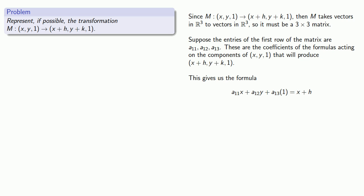In order for this to be true for all values of x, we need a11 to be 1, a12 to be 0, and a13 to be h. And so this gives us the first row of the matrix.